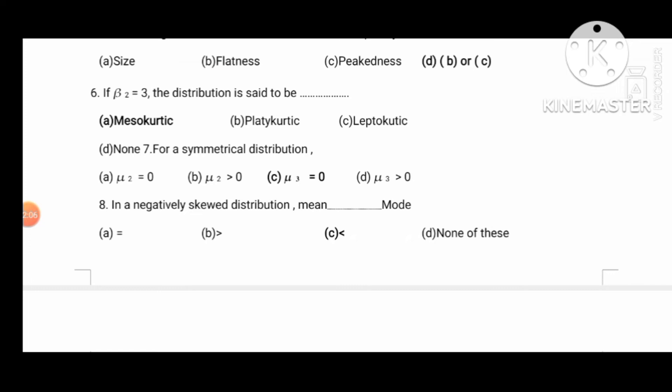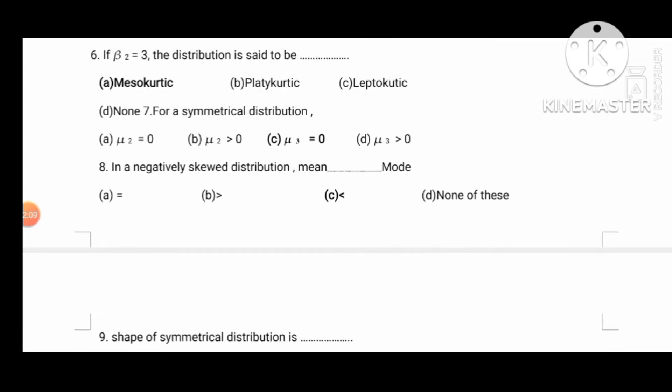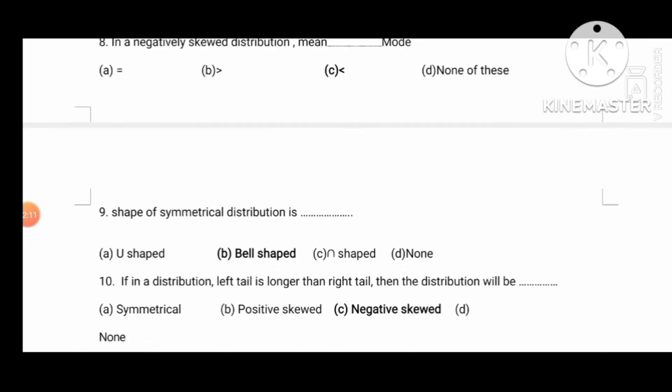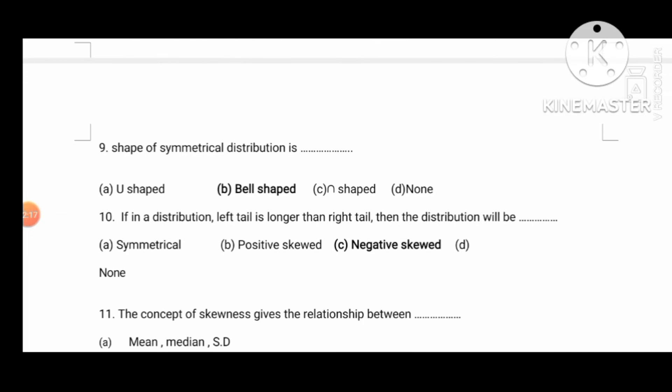For the ninth question: the shape of the symmetrical distribution is bell-shaped — a bell-shaped curve. In a distribution, if the left tail is longer than the right tail, then the distribution will be negatively skewed.